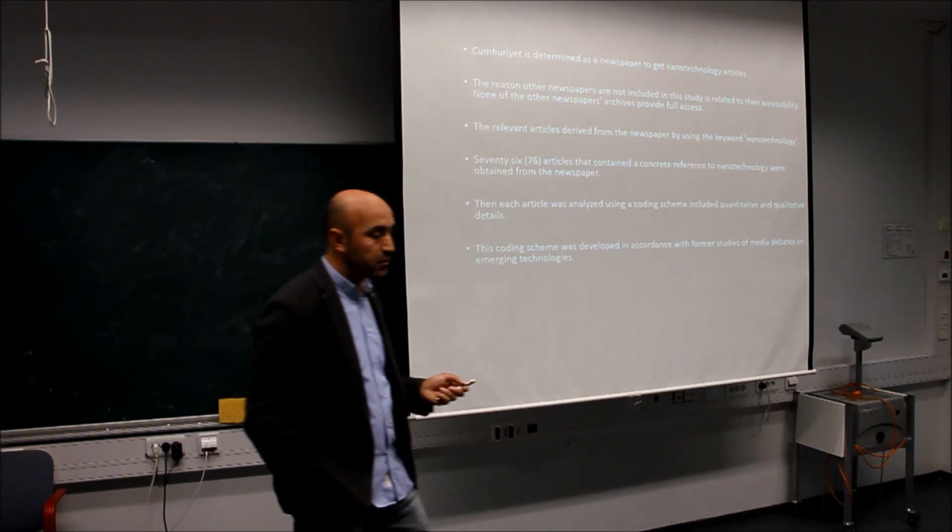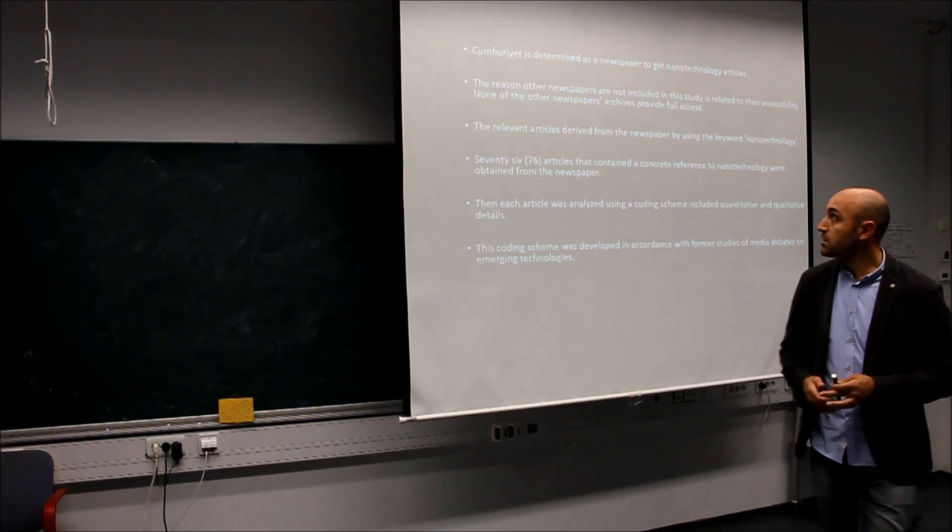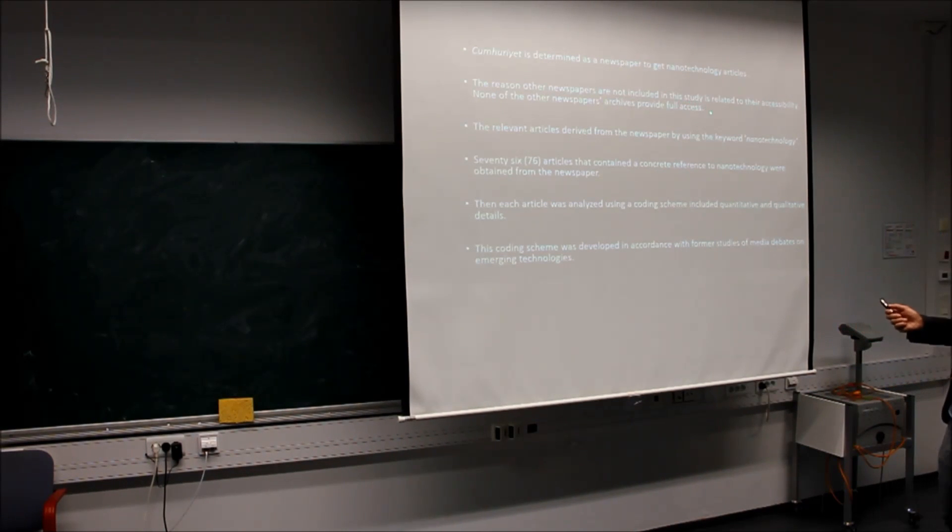The newspaper selected to determine nanotechnology articles. The reason why I chose this newspaper is about its accessibility because none of the other newspapers provide full access. For the relevant articles, I chose 76 articles by using keyword nanotechnology. I saw that 76 articles contained a significant reference to nanotechnology. Then each article was analyzed using a coding scheme including quantitative and qualitative details.